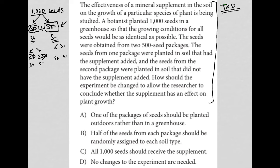Choice A: one of the packages of seeds should be planted outdoors rather than in a greenhouse. I don't think so — planting outdoors actually makes this less controlled. You don't know what's in the rainfall, what somebody may be spraying, or what's in the wind. We want more control. The greenhouse is definitely the best place.